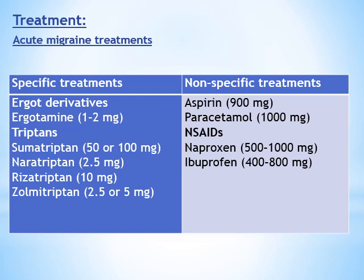Migraine treatment includes the treatment of the migraine attack itself to abort the attack, and prophylactic treatment against recurrence. The abortive or acute migraine treatment includes specific treatments such as ergot derivatives — ergotamine — and more recently the triptans, including sumatriptan, naratriptan, rizatriptan, and zolmitriptan in different formulations. A relative contraindication to these specific treatments exists in cases such as ischemic heart disease, uncontrolled hypertension, and severe liver disease.